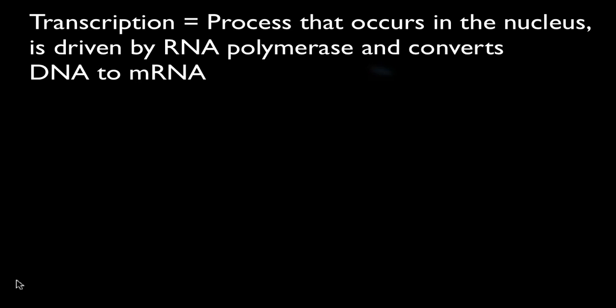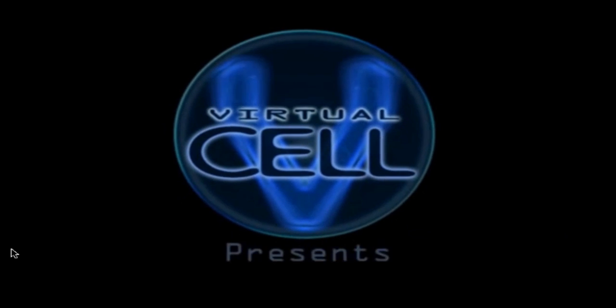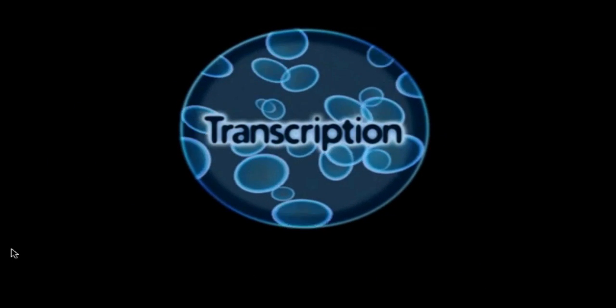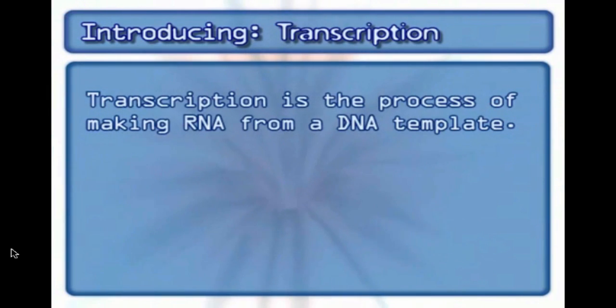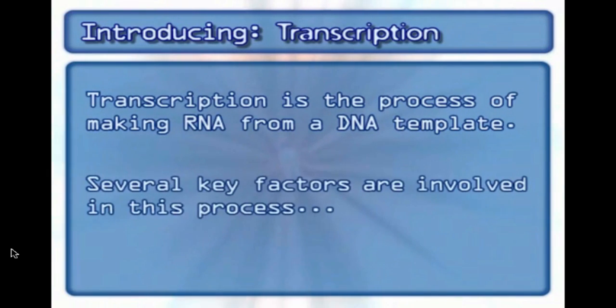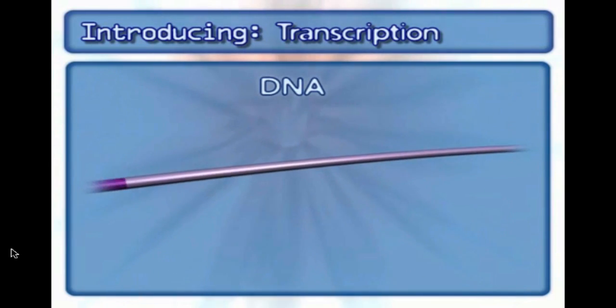Now that we've talked about the central dogma and what a gene is, we're going to talk about transcription first. Transcription is the process of going from a strand of DNA — a gene on the DNA strand — to an mRNA. We have an animation here with the sound off so we can talk over it. We're going to go from the process of making RNA, specifically mRNA — messenger RNA — from a DNA template, and we'll talk about the key factors involved in this process.